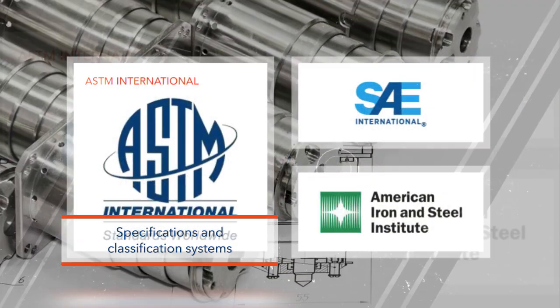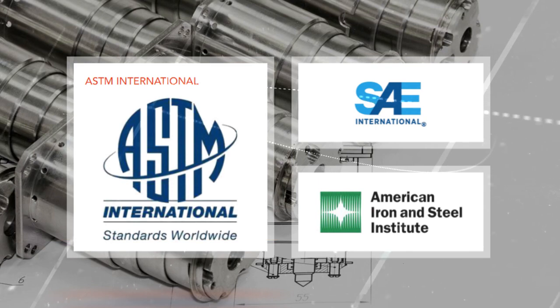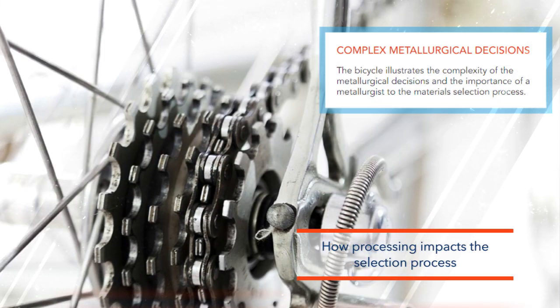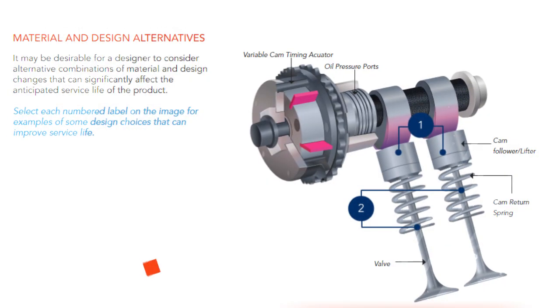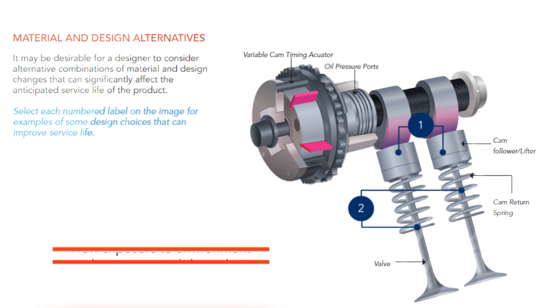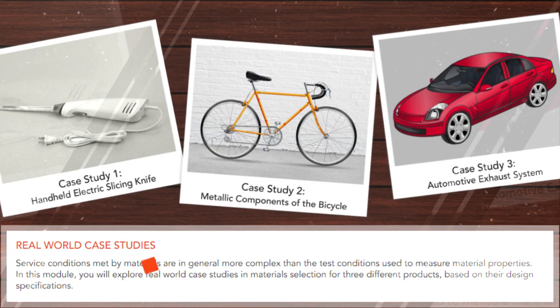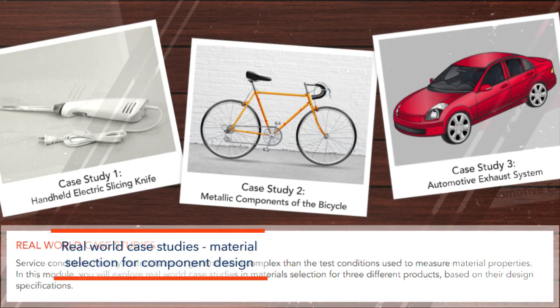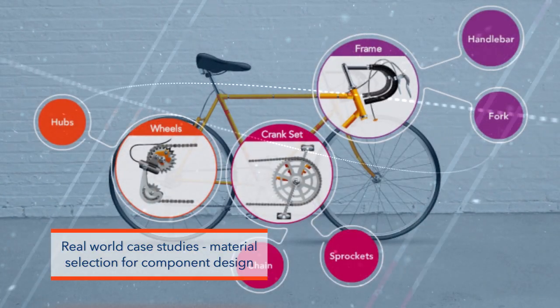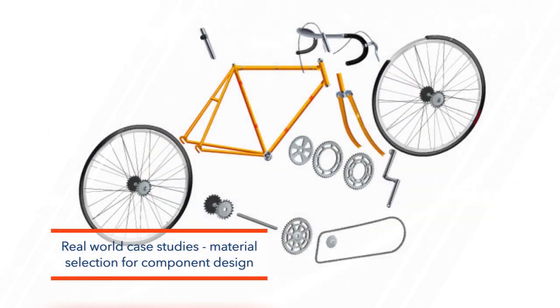Topics covered include specifications and classification systems, how processing of a material into the finished part impacts the selection process, and how exposure to environment accelerates material degradation. Real-world case studies will be discussed for an insight into the key considerations in material selection for component design.